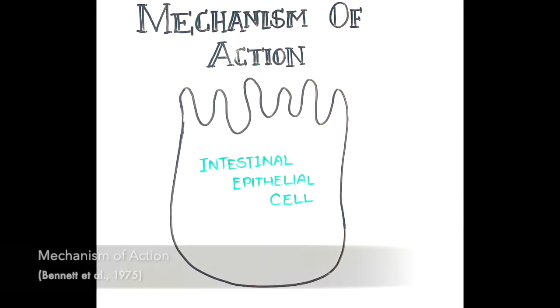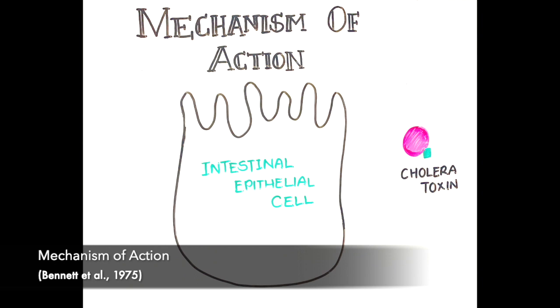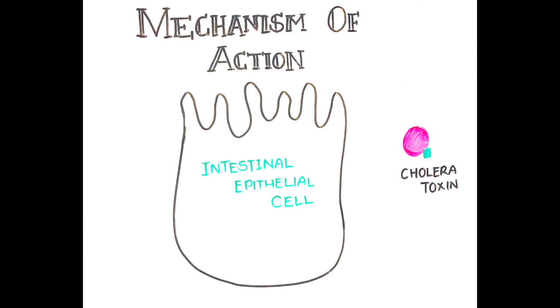We will now discuss the mechanism of action of cholera. The toxic subunits of the cholera bacteria are subunit A and subunit B.